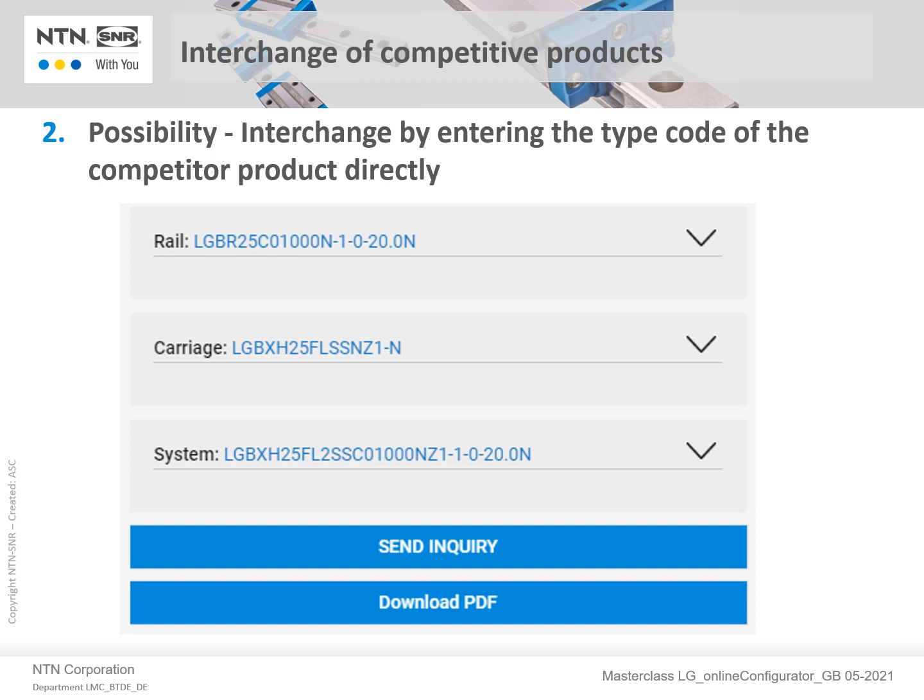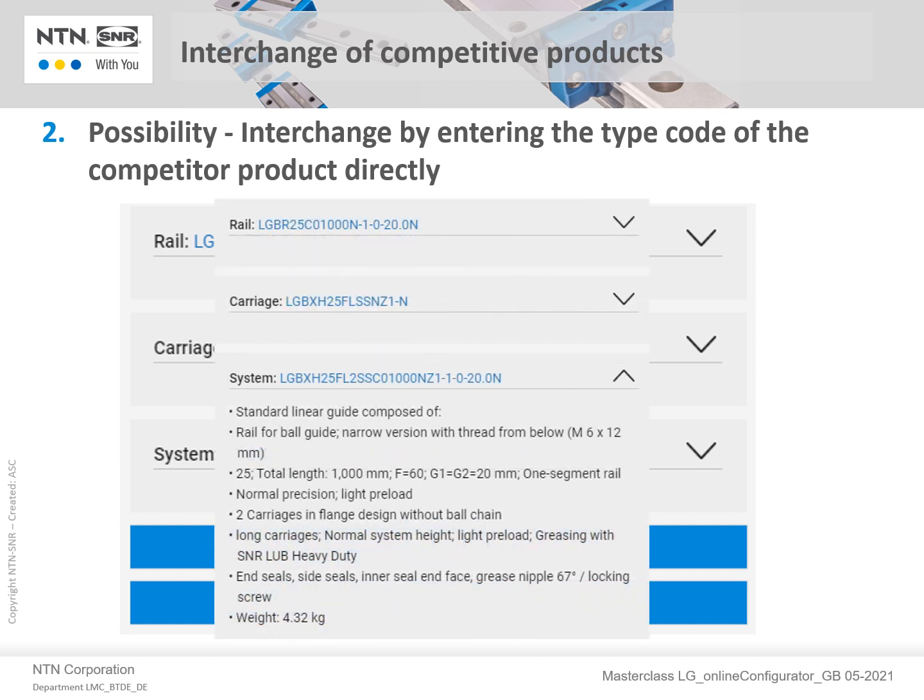Below this analysis are the determined part numbers for the rail, carriages, and complete system, if applicable. If you click on any one of the downward arrows beside one of the part numbers, you will see a full description of the features. A copy of that description can also be downloaded in PDF form.